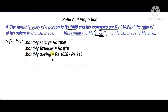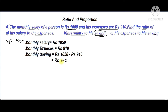Subtracting: 0 minus 0 is 0, 5 minus 1 is 4, 10 minus 9 is 1, giving 140. So the monthly saving is rupees 140.